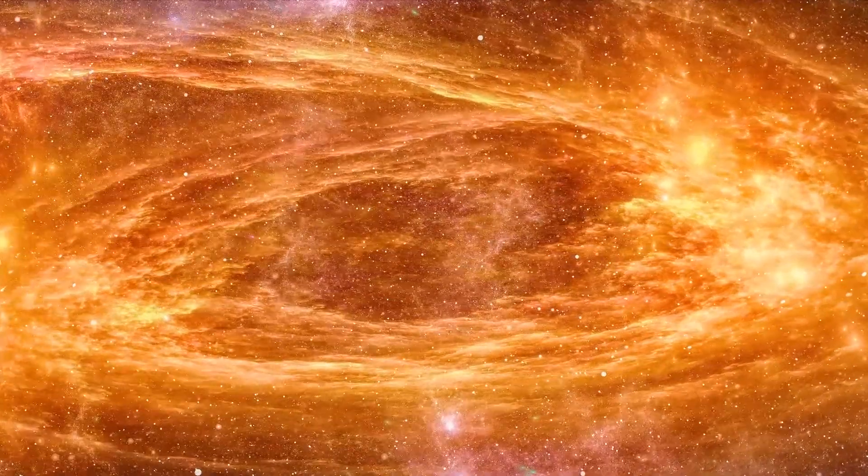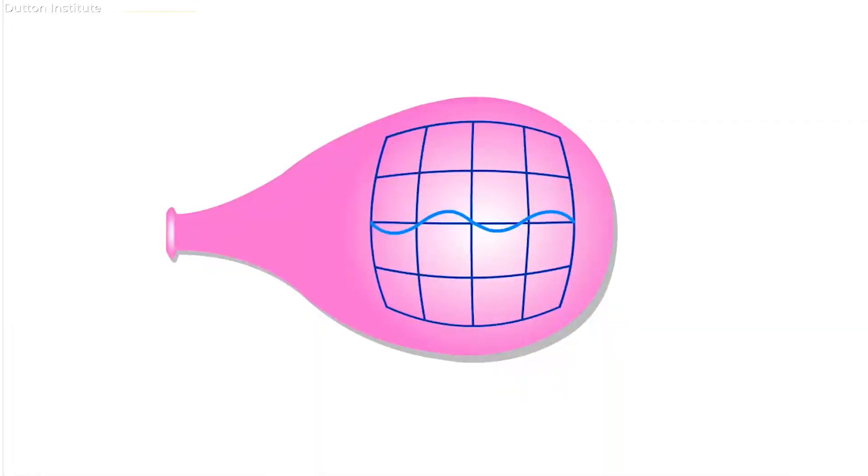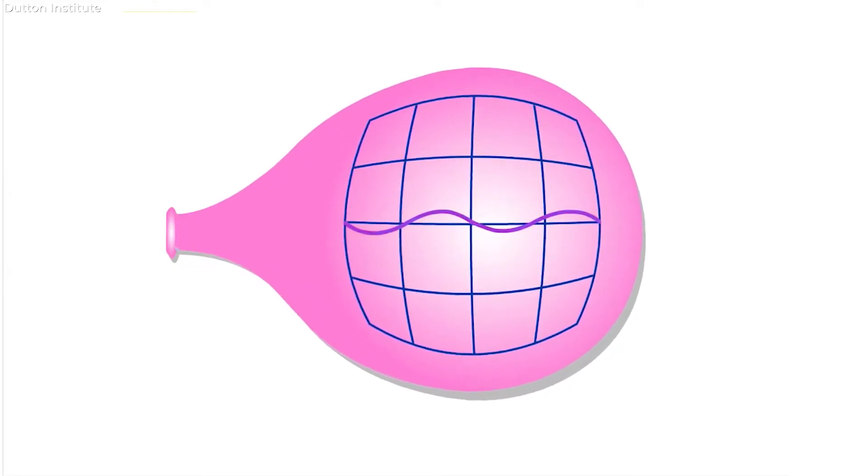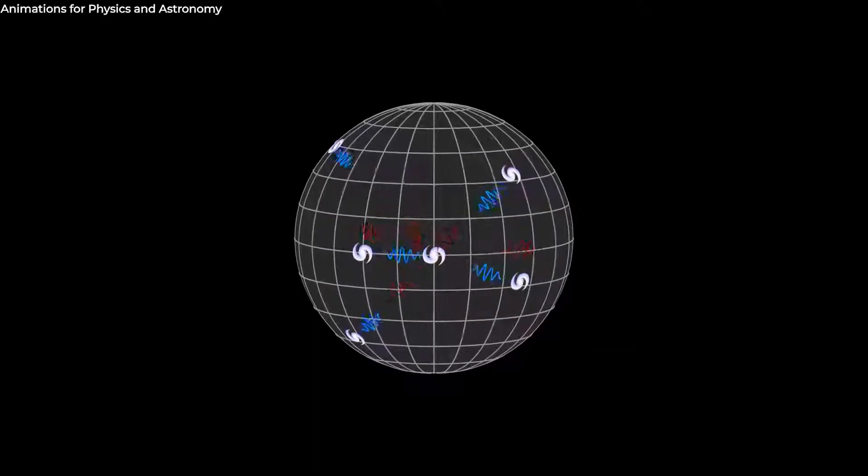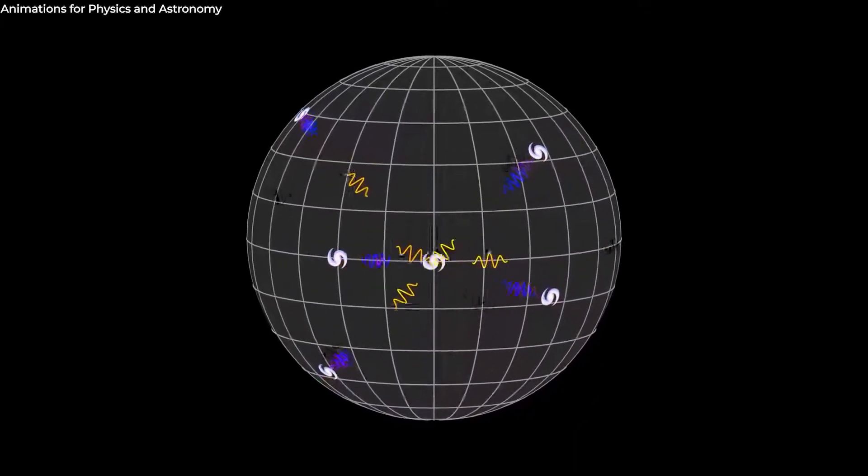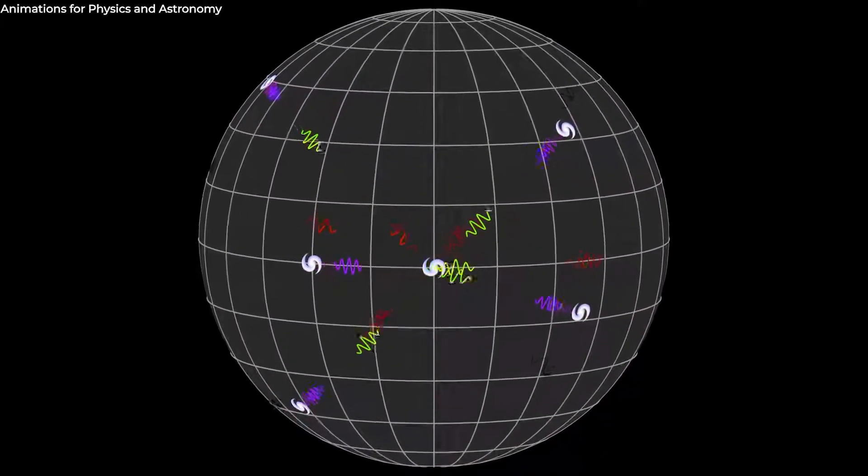In the visible spectrum, short wavelength, high frequency light is blue, whereas long wavelength, low frequency light is red. This is because different wavelengths of light have distinct color properties.